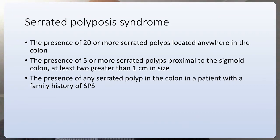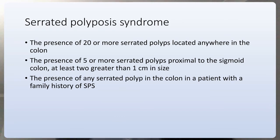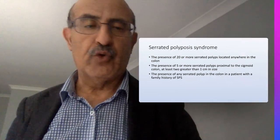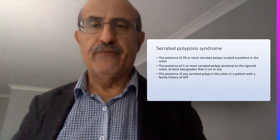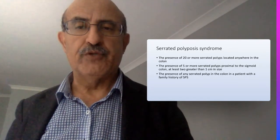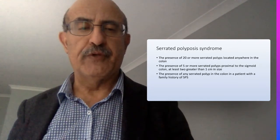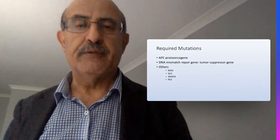A third criterion: if a patient has a family member already diagnosed with serrated polyposis syndrome, even a single serrated polyp anywhere in the colon qualifies them as part of the affected family. It is a small group of patients who develop colon cancer, but it is an important group and represents a relatively recent discovery.